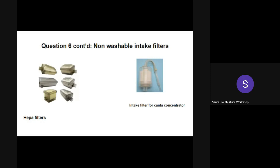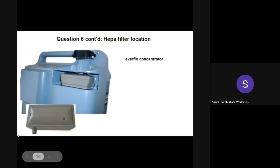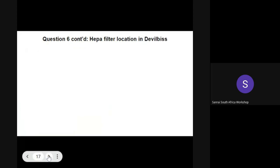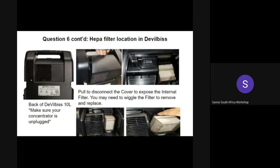The intake filter is connected to the compressor intake and traps dust particles that may have passed through the cross-particle filter. It also acts as a noise dampener for the compressor. Some concentrators like the AirSep and the J5 have washable intake filters that can be washed the same way as the cross-particle filter. Concentrators like the DeVilbiss use non-washable HEPA — High Efficiency Particulate Air — filters that should be replaced when visibly dirty. The Canta concentrator has a non-washable intake filter that can be opened like a bottle to blow out accumulated dirt, then replaced when it can no longer be reused.